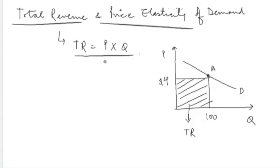Total revenue is nothing but price into quantity. This length is the price and this width is the quantity. So price into quantity means this area represents the total revenue earned by the supplier in the market when the equilibrium price is $4 and the quantity is 100 units. Now we will try to look at how this total revenue — this area — changes as we move along the demand curve.